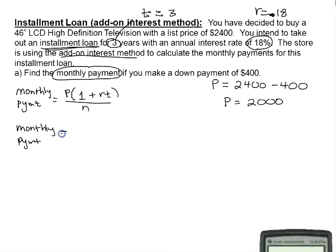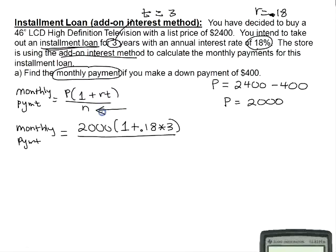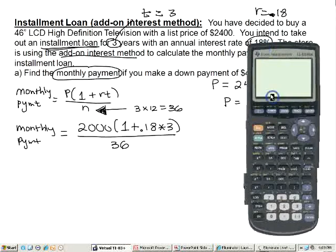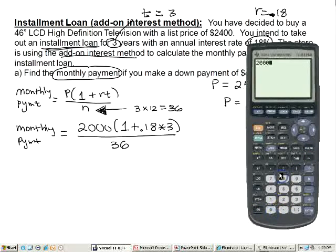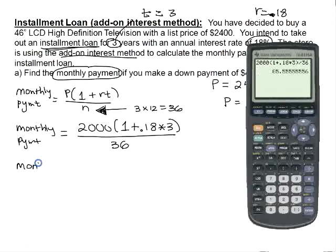Our monthly payment will be 2,000 times (1 + 0.18 × 3) over N. N is the total number of monthly payments: a three-year loan with monthly payments means 3 × 12 = 36 payments, so N is 36. We type this directly into our calculator: 2,000 times (1 + 0.18 × 3) divided by 36. Our monthly payment will be $85.